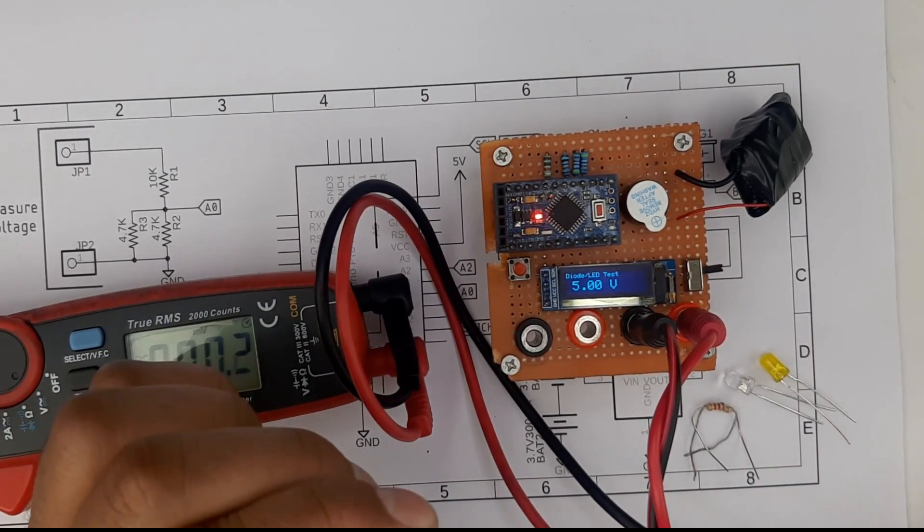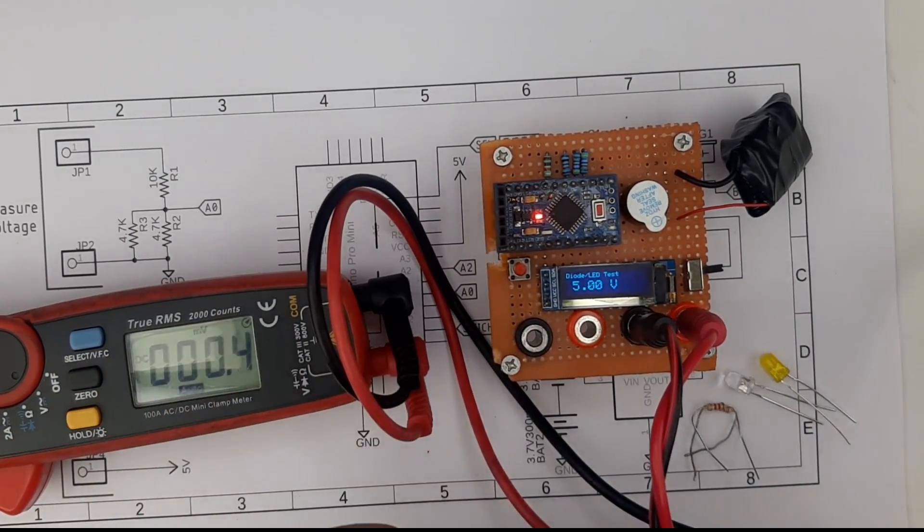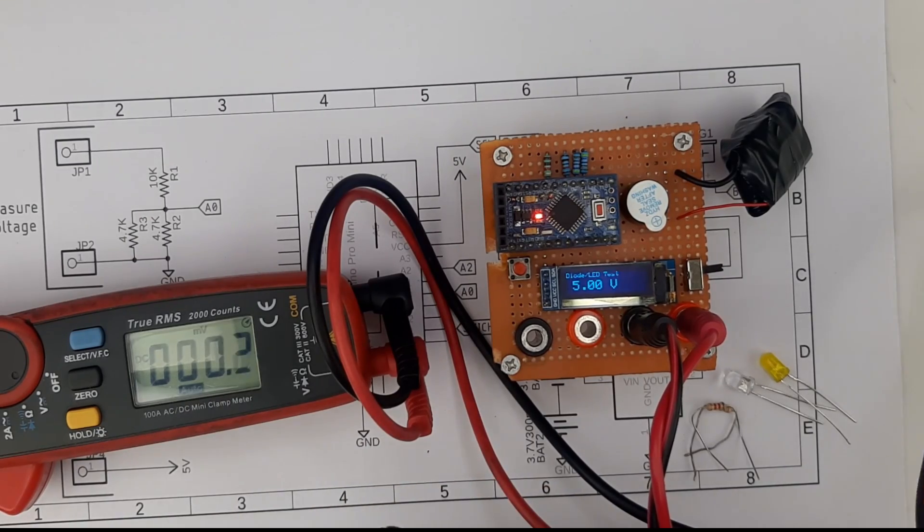I have a diode over here and if I connect these alligator clips you can see the voltage drop of the diode. It's measuring very accurately. Now if I connect LEDs it will show you the voltage drop across the diode.